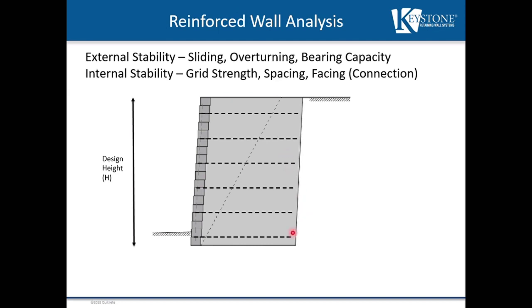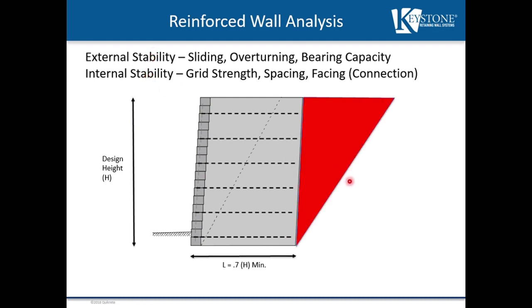When we design our reinforced retaining wall, we look at two things: external stability and internal stability. External stability means we build a mass of soil big enough to resist the soil loads and the loads above the wall from sliding the wall forward or overturning it. Typically that distance is going to be 70% of the wall height. For example, a 10-foot high wall would have grid lengths of 70%, or 7 feet, at a minimum. If there's a slope at the top or some type of surcharge, that number might be larger.